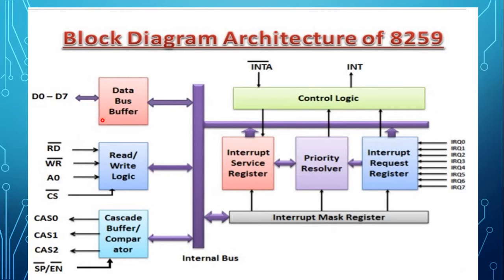The first block is the data bus buffer. It is a tri-state bi-directional buffer used to interface the internal data bus of the 8259 with the microprocessor data bus. It allows the 8085 to send control words to the 8259 and read status words from the 8259. It is an 8-bit data bus buffer that allows the 8259 to send interrupt opcodes and the address of the interrupt service subroutine to the 8085 microprocessor.